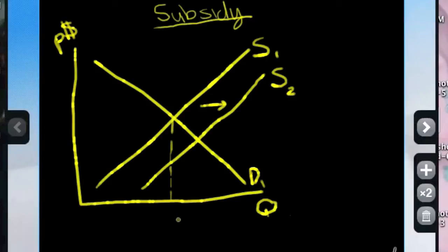So again we have our quantity 1 and we have our P1, and then we have quantity 2 which is increasing, and then we have price which is decreasing. So with a subsidy, the price is decreasing and the quantity is increasing.